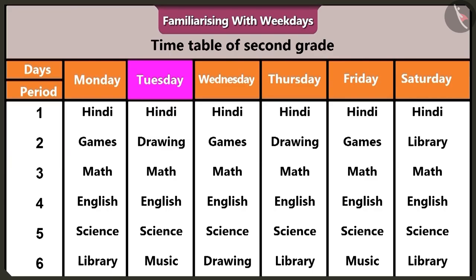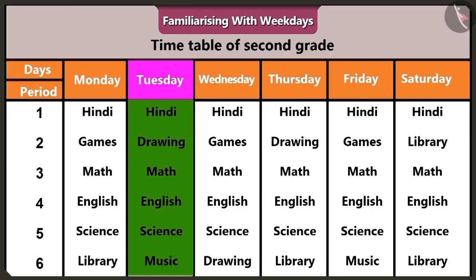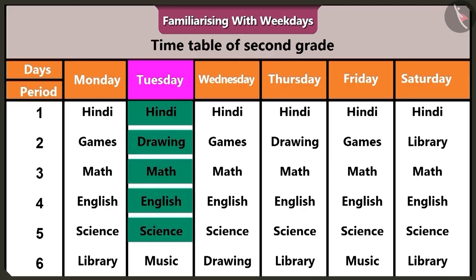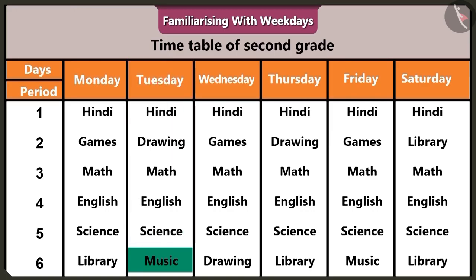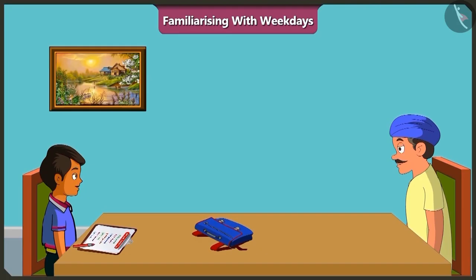Chotu, you have to keep the books for Tuesday. Look, in this timetable the days from Monday to Saturday are written. Tomorrow is Tuesday, so we have to look at the subjects written in Tuesday's column. The subjects are Hindi, Drawing, Mathematics, English, Science and Music. Now I will remember this — in order to see the timetable, I will have to keep in mind the days of the week. Thank you, Uncle, for teaching me so much.